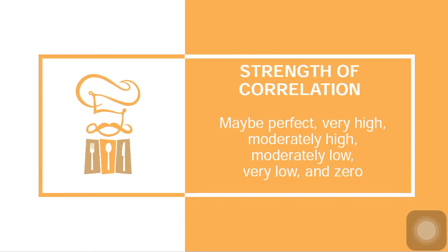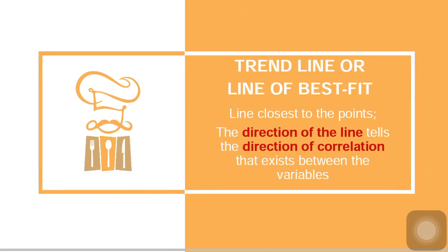How about the strength of the correlation? The strength of the correlation may be perfect, very high, moderately high, moderately low, very low, or zero — meaning no correlation. To check its strength, we need to draw a trend line, or some call it a line of best fit. This is the line closest to the points. It's not to connect the dots; you need to draw a line that may or may not pass through all the points, but it is the closest line to the points.